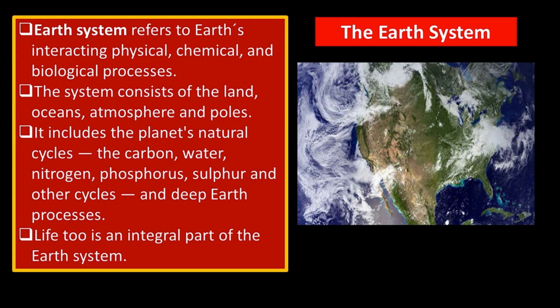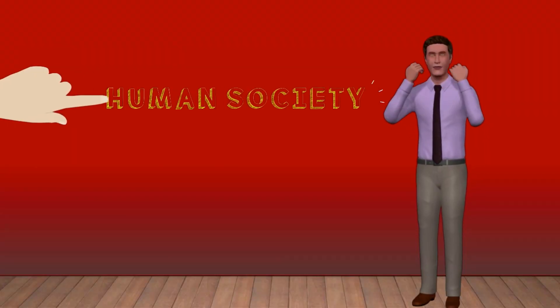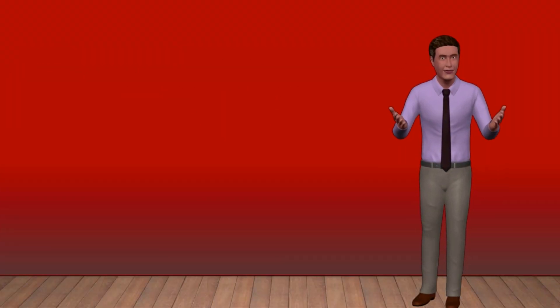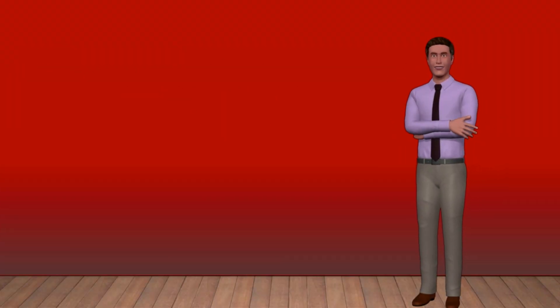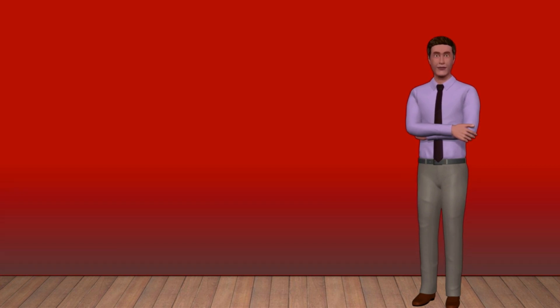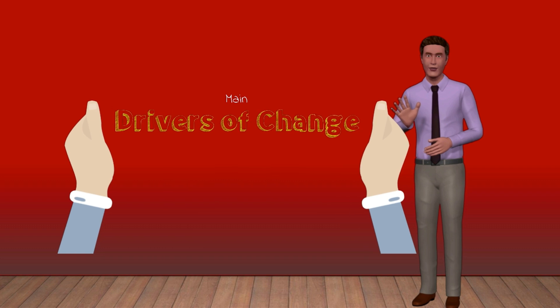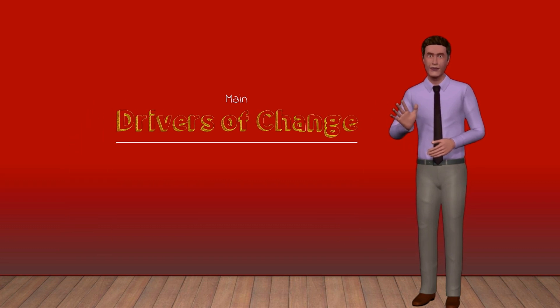Life too is an integral part of the Earth system. Life affects the carbon, nitrogen, water, oxygen and many other cycles and processes. The Earth System now includes human society. Our social and economic systems are now embedded within the Earth System, and in many cases, the human systems are now the main drivers of change in the Earth System.